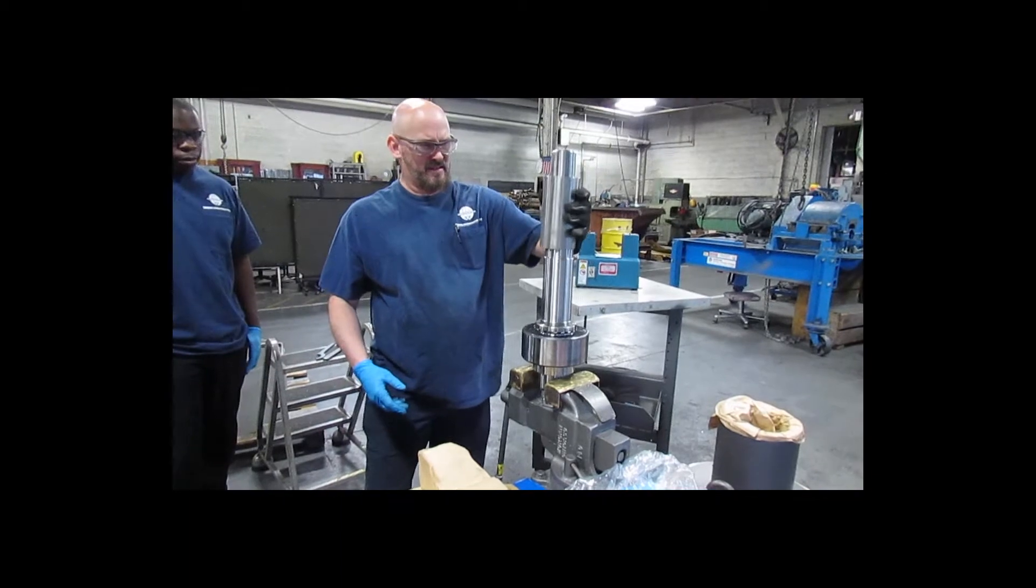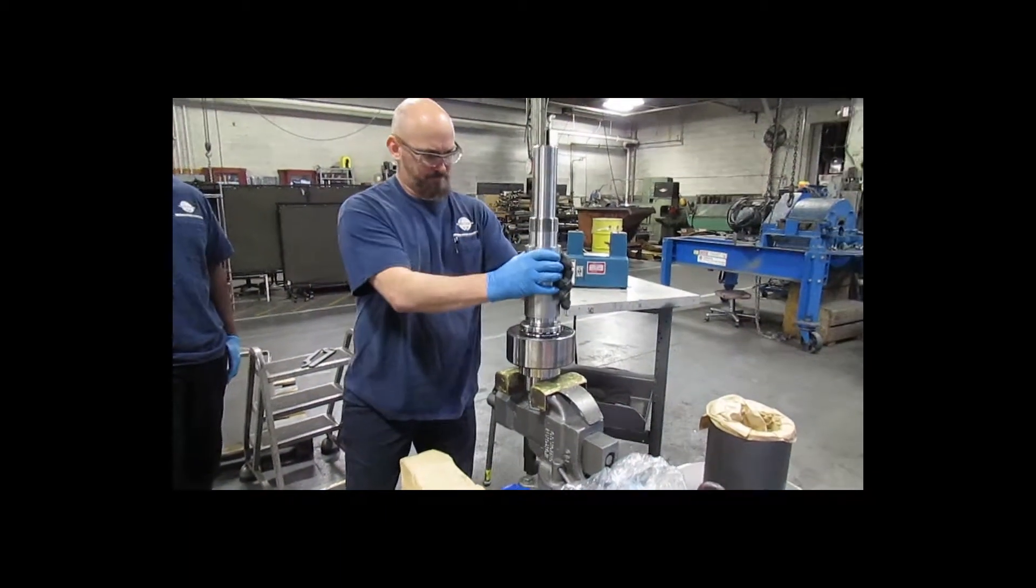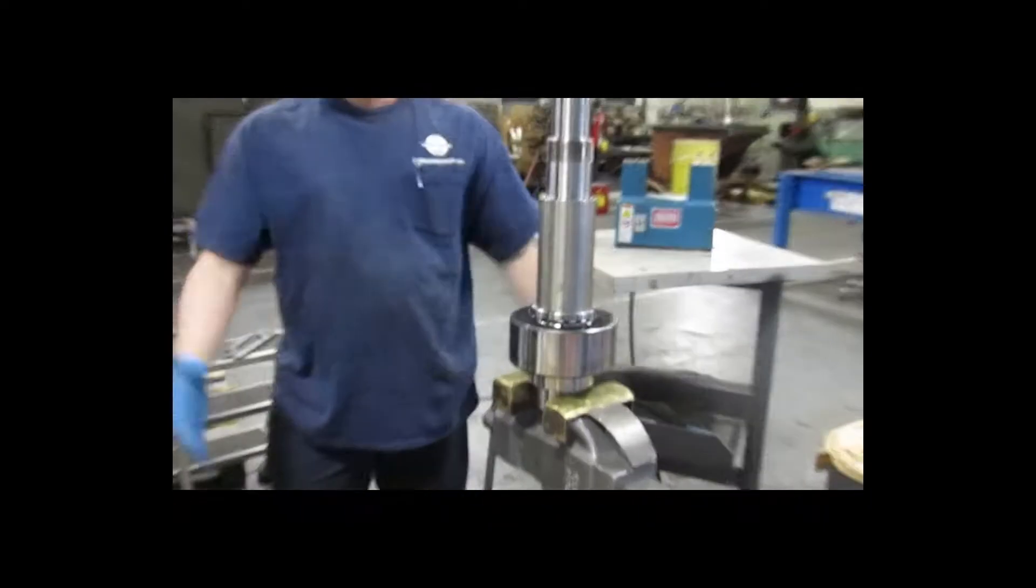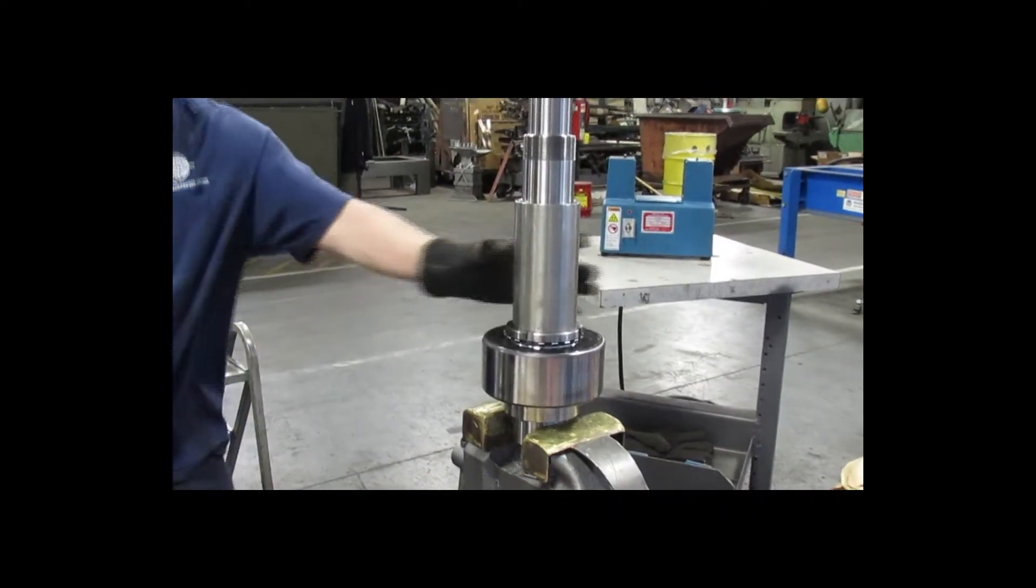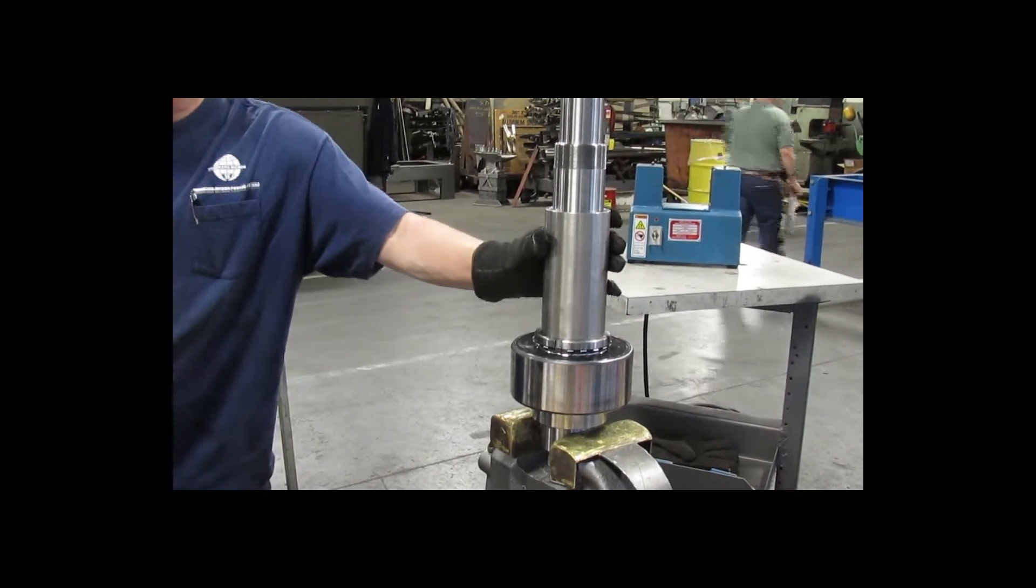The sleeve is then installed on top of the upper rotor bearing. This sleeve will provide proper spacing between the upper and lower rotor bearings. It will also seat the inner race of the lower rotor bearing.